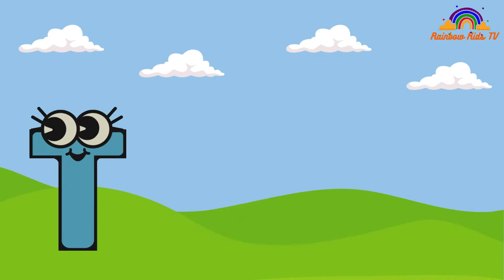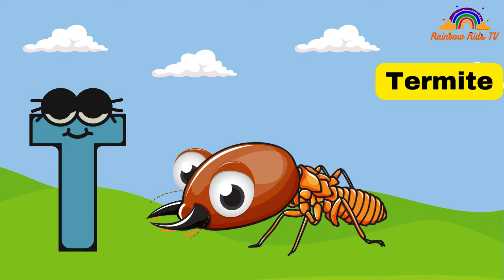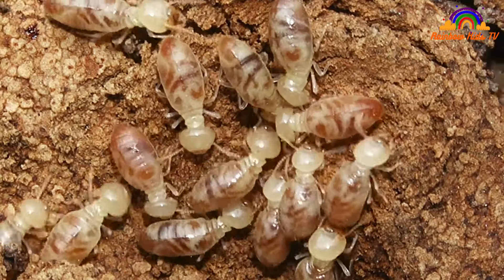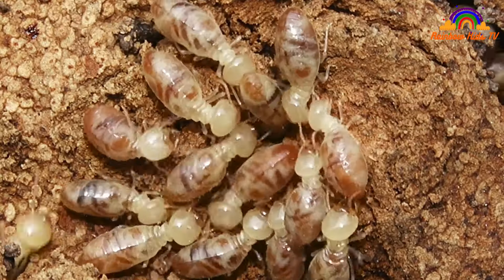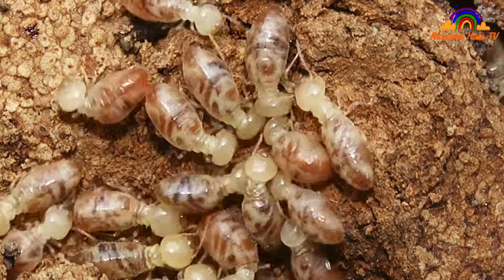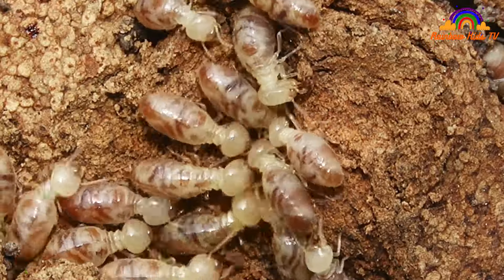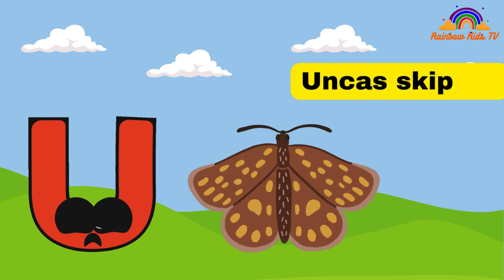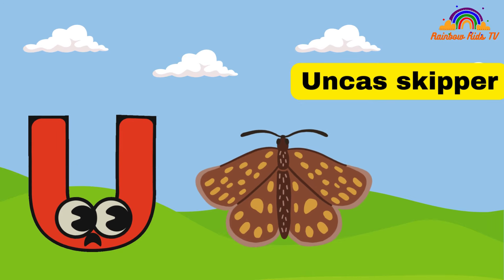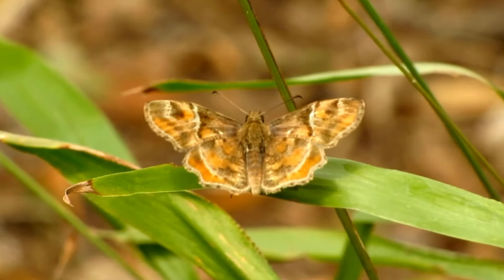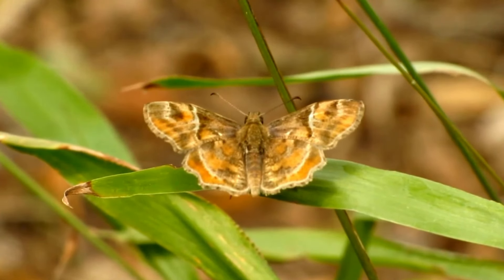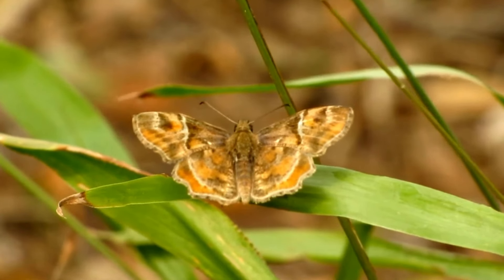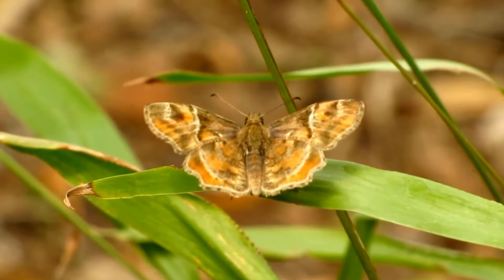T. T is for Termite. U. U is for Uncas's Skipper.